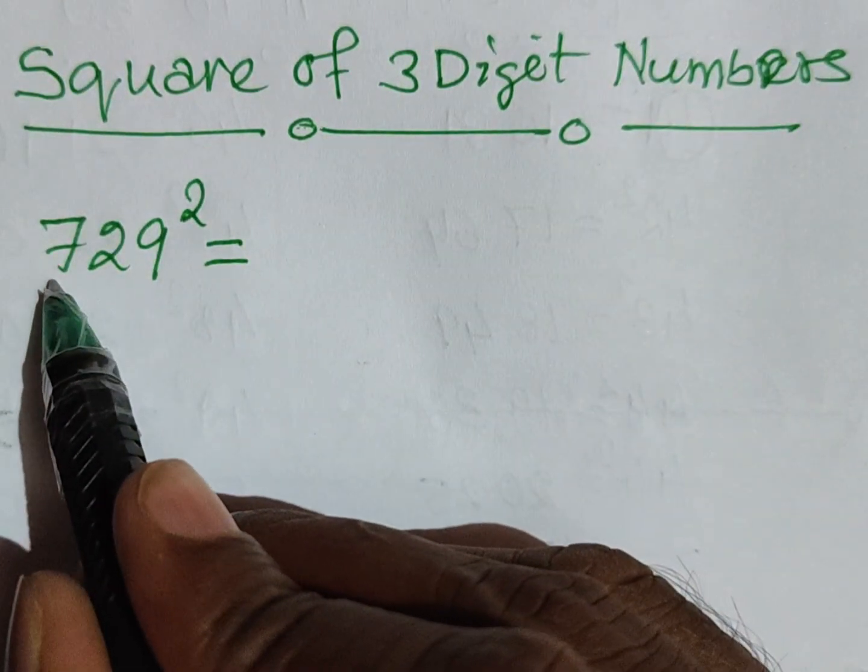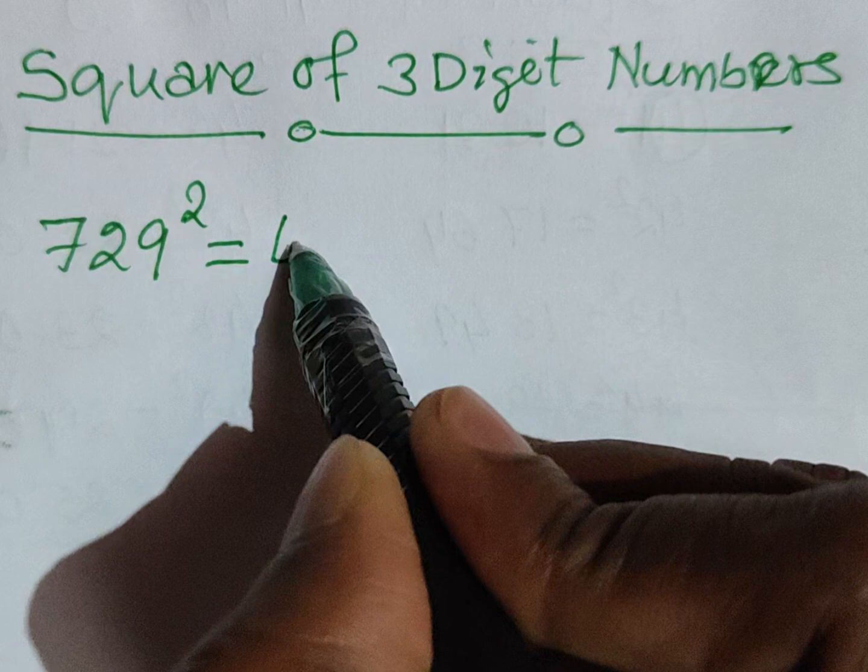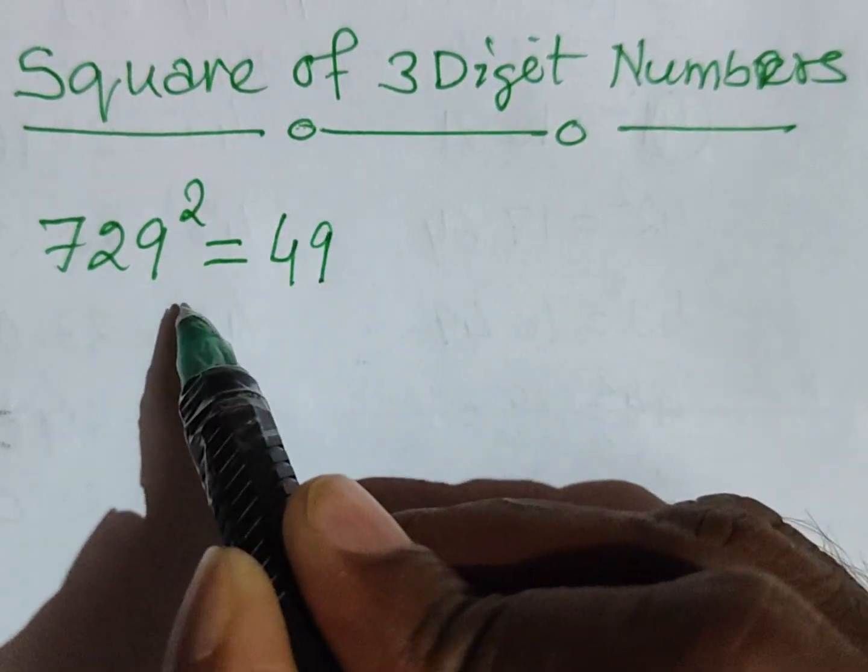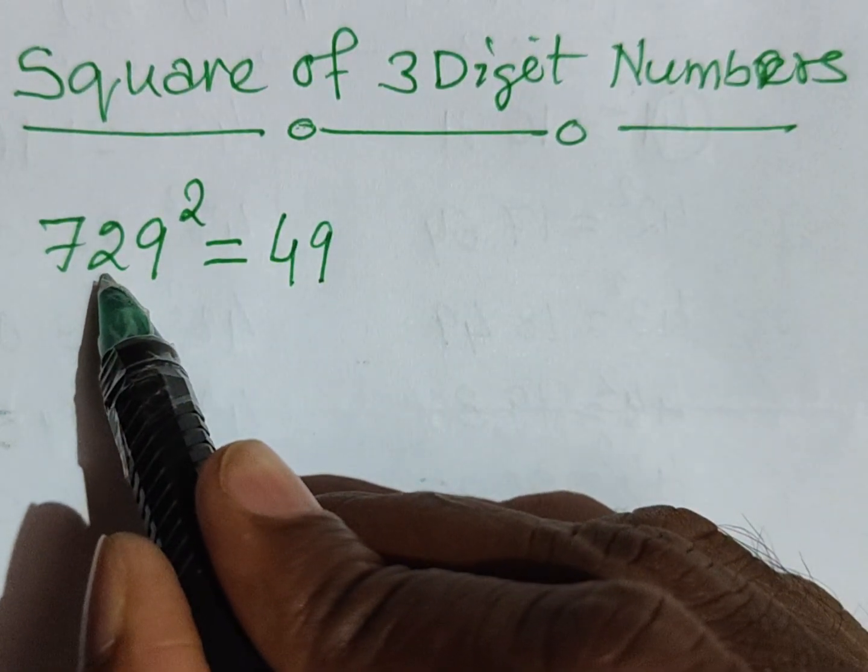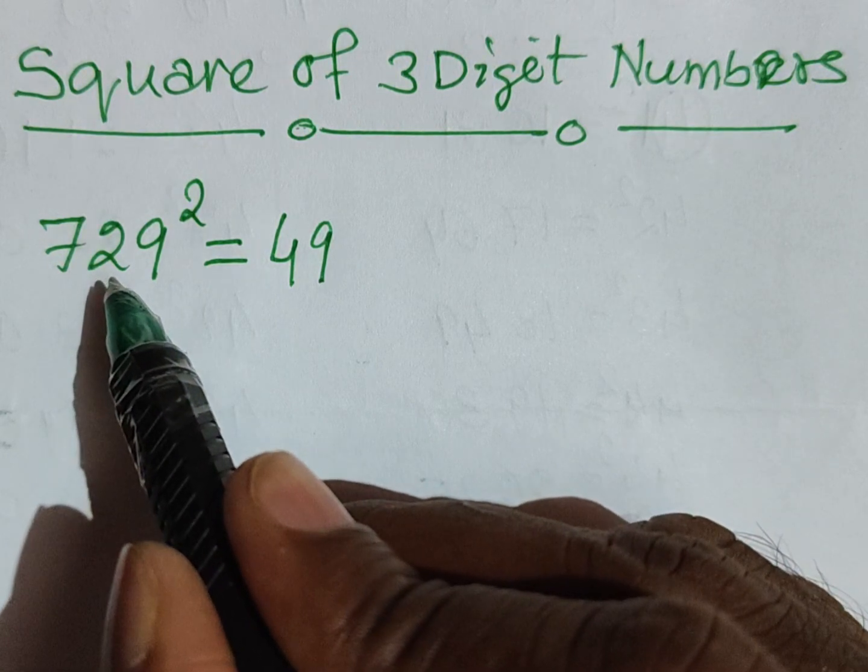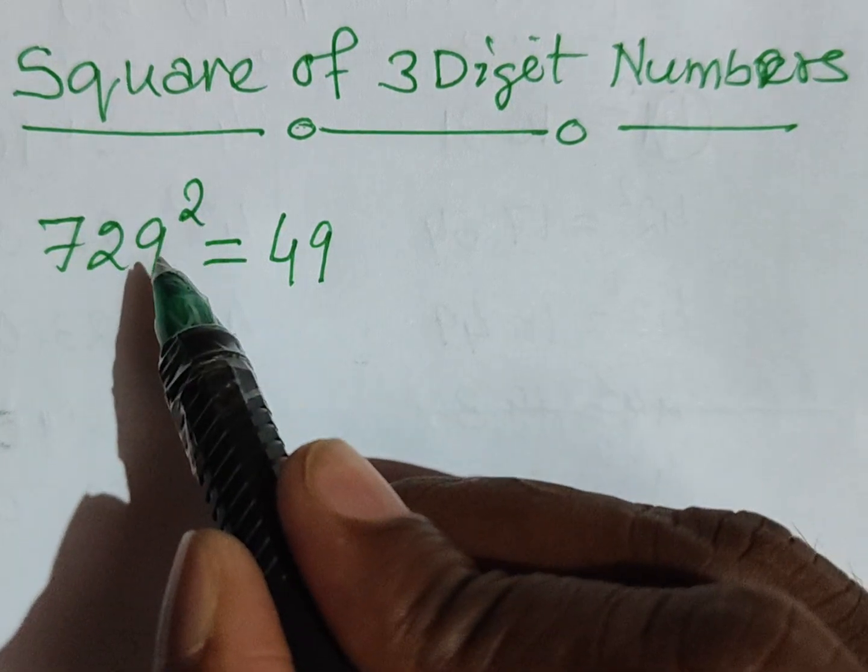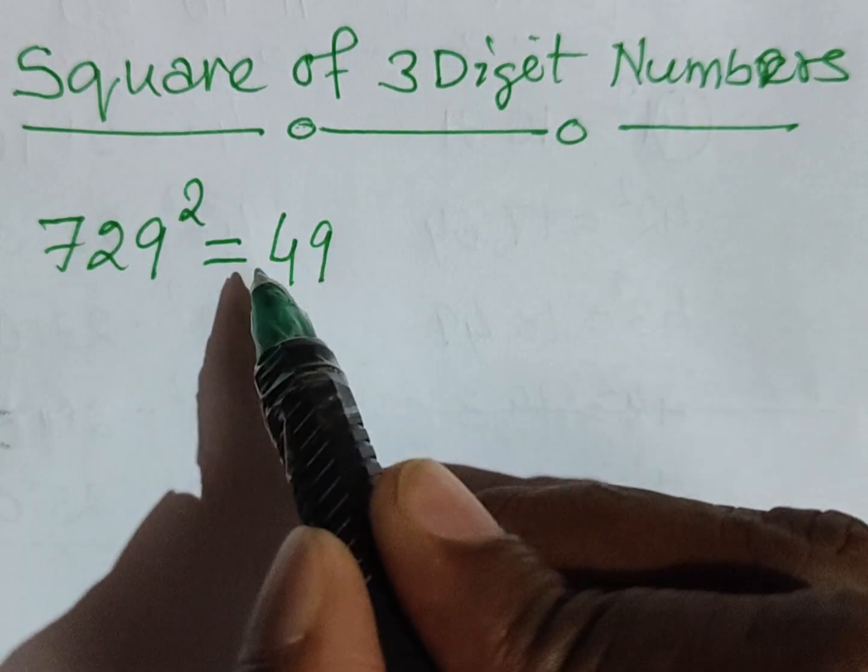First item: square of the hundreds digit, which is 49. Square of 7 is 49. Then write the square of the tens digit 2. Its square is 4, but 4 is a single digit number. We always write the two-digit square of any digit.